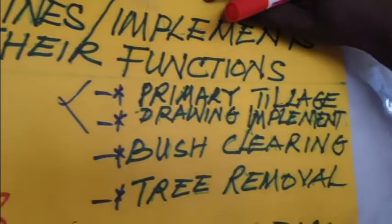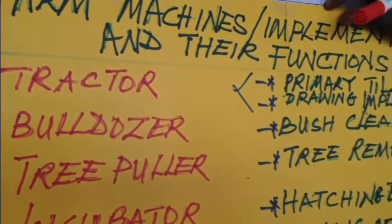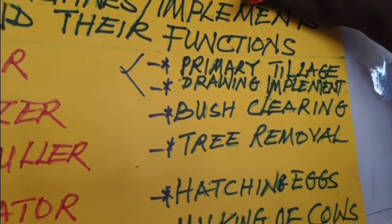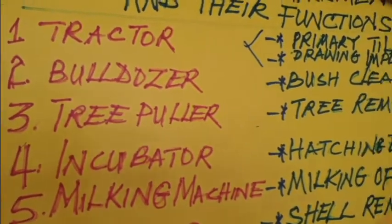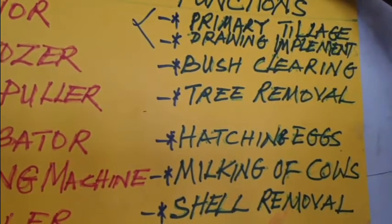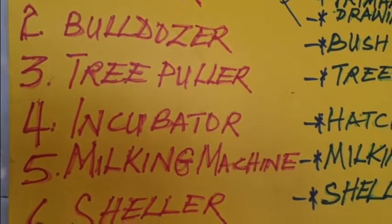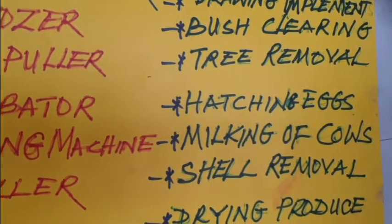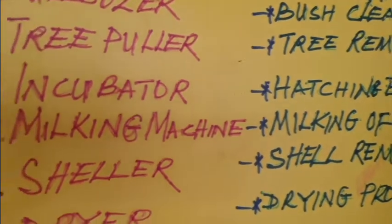The bulldozer is used for bush clearing. Number three is the tree puller — it's used for removing trees on the farm so that the tractor can be used easily. Number four is the incubator, which is used for the artificial hatching of fertilized eggs.